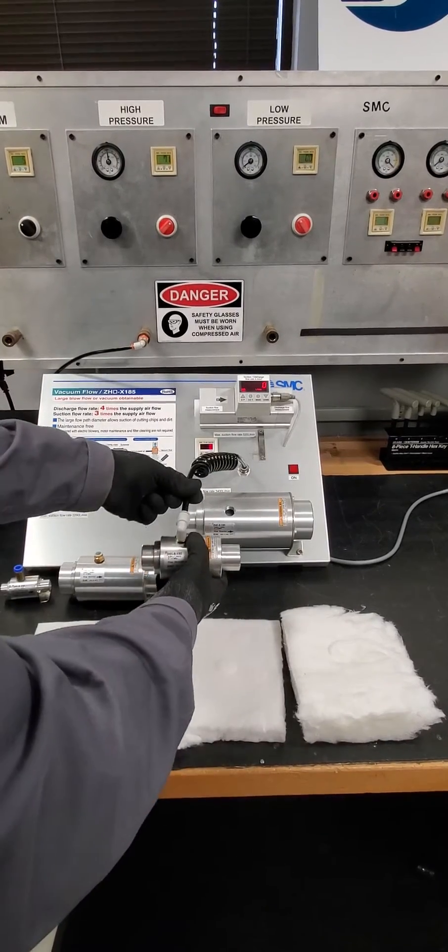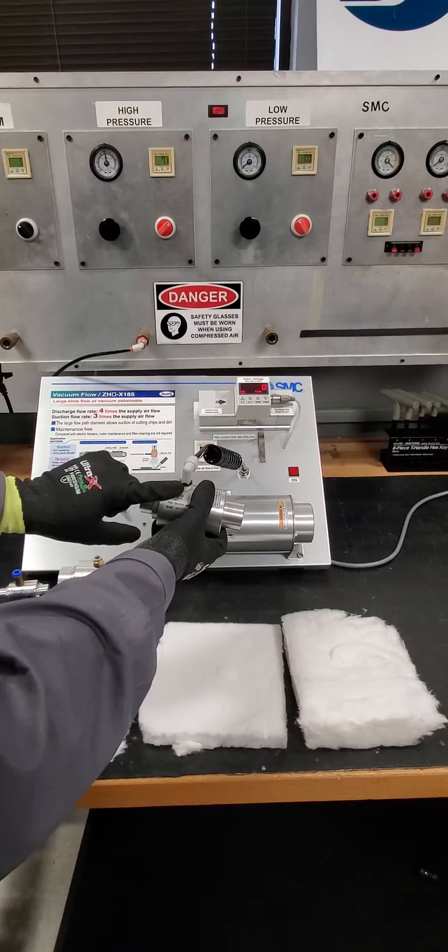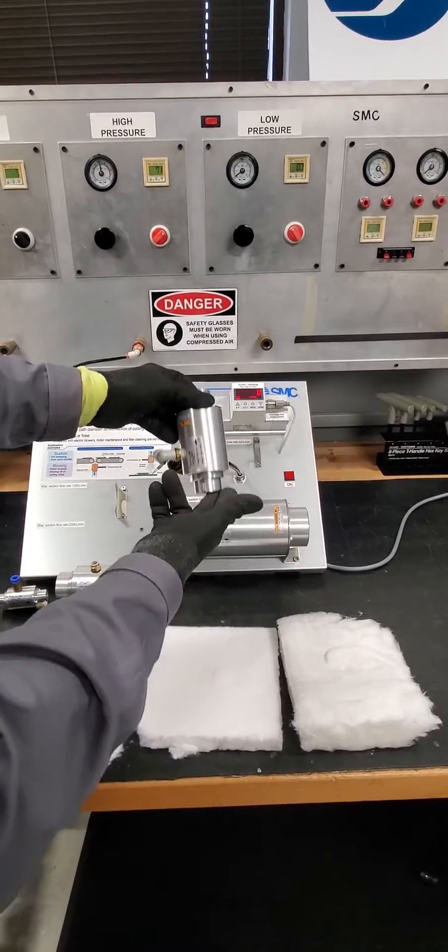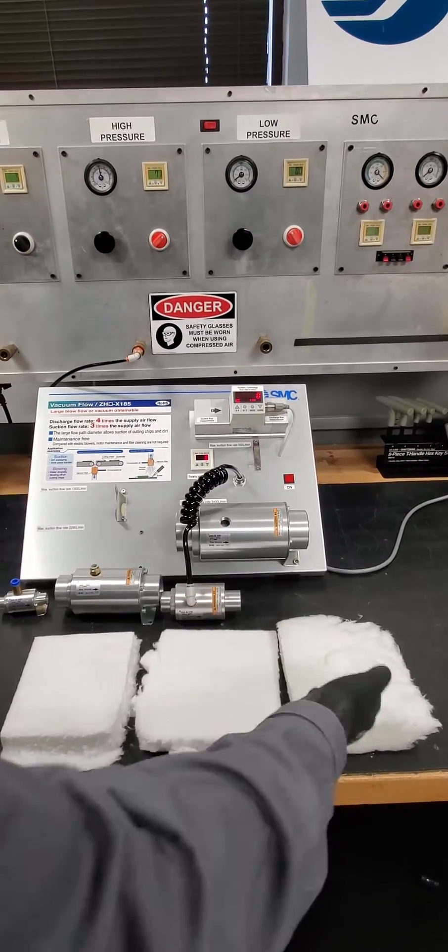We're using compressed air, about 70-72 psi, through the Coanda principle, creating vacuum flow or blowing. We're going to use it for vacuum to pick up a fiber matte material.